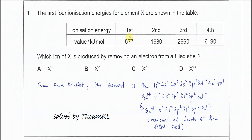From here we know that the big jump is between the third and fourth ionization energies. So we know that this element X has three valence electrons—it's group 13.